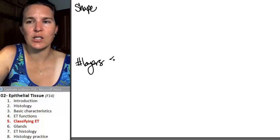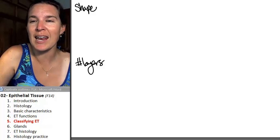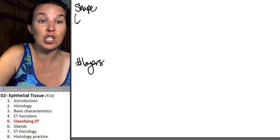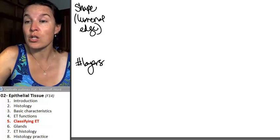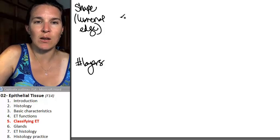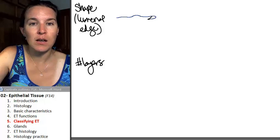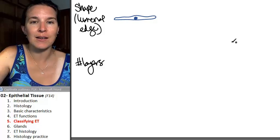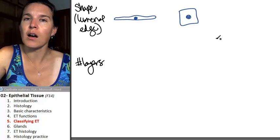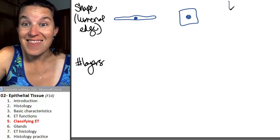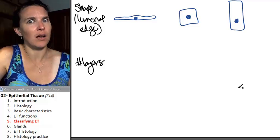So let's look at shape first. There are three possible shapes that our epithelial cells can take, and let's make sure that we're clear that this is the shape of the cell on the luminal edge or the apical edge of the tissue. You can have squished flat pancake cells, you can have square shaped cells, and then you can have a tall boy.